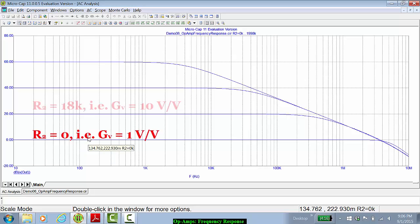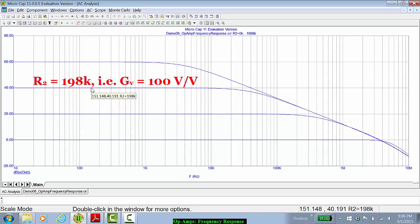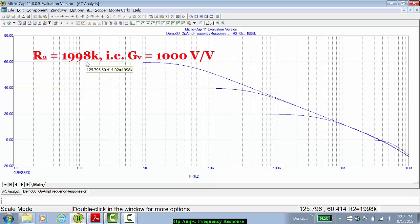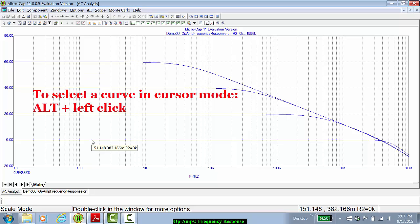One for R2 equals 0k, one for R2 equals 18k so the gain is 10 volts per volt, one for R2 equals 198k, 100 volts per volt, and one for R2 equals 1998k or AV equals a thousand volts per volt. If I check the numbers: 0, 20 dB, 40 dB, 60 dB.